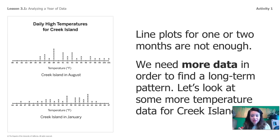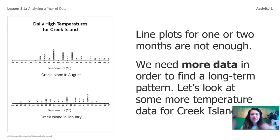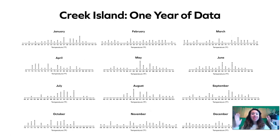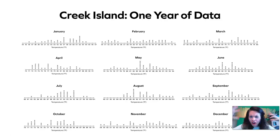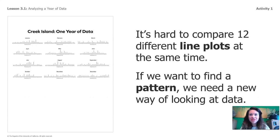So we've been using line plots. Line plots for one or two months are not enough — we need more data in order to find a long-term pattern. So let's look at some more temperature data for Creek Island. This is one year of line plot data for Creek Island. It's hard to compare 12 different line plots at the same time. If we want to actually find a pattern, we need a new way of looking at and organizing this data.